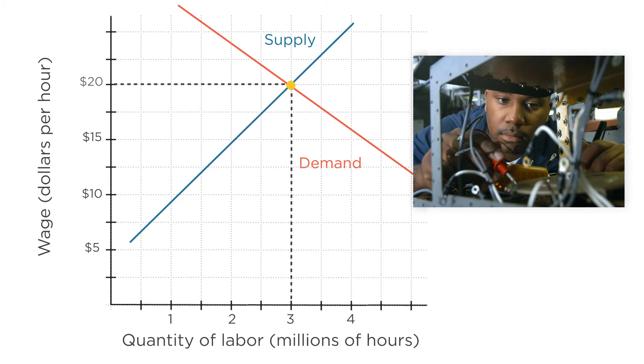In this case, if the government comes in and imposes a minimum wage of $7.25 an hour, what happens? Absolutely nothing. The electricians in this market are already getting more than $7.25 an hour in wages — the minimum wage is not binding. This is an important lesson to remember: for government policies to matter, they have to actually constrain the market equilibrium. Otherwise they're irrelevant.